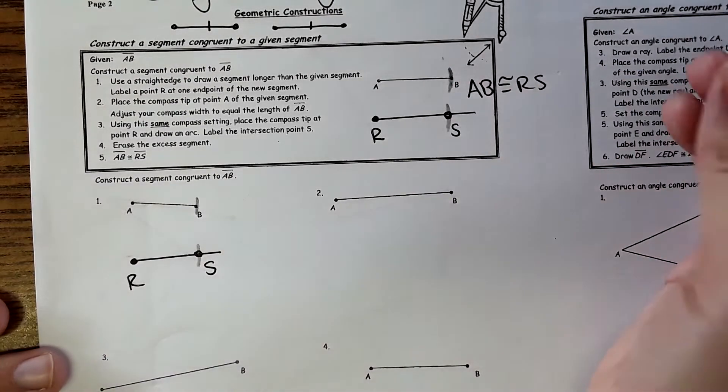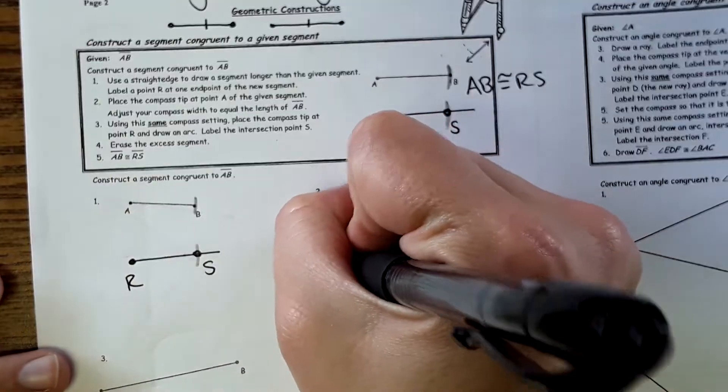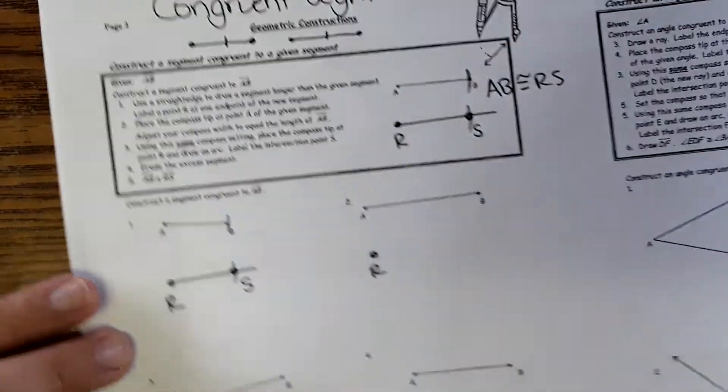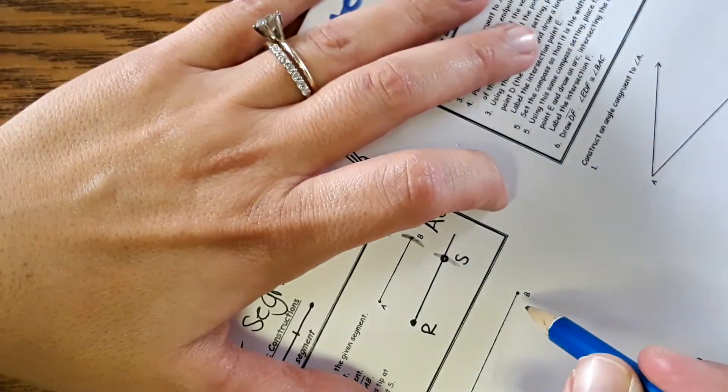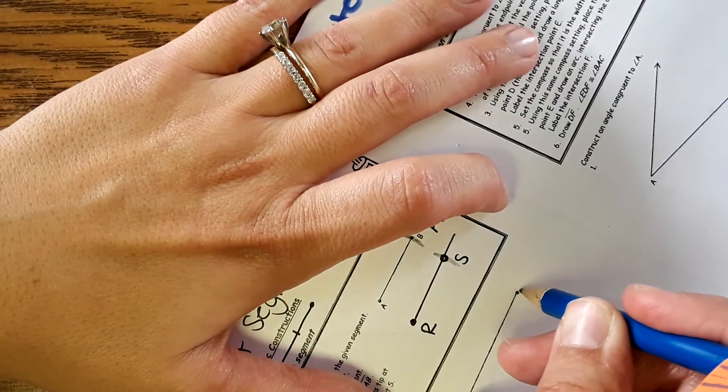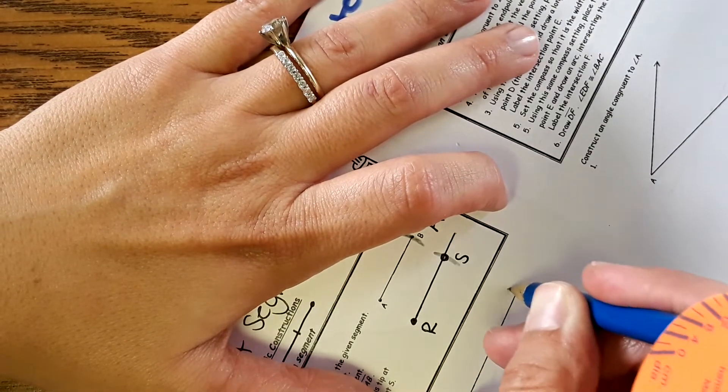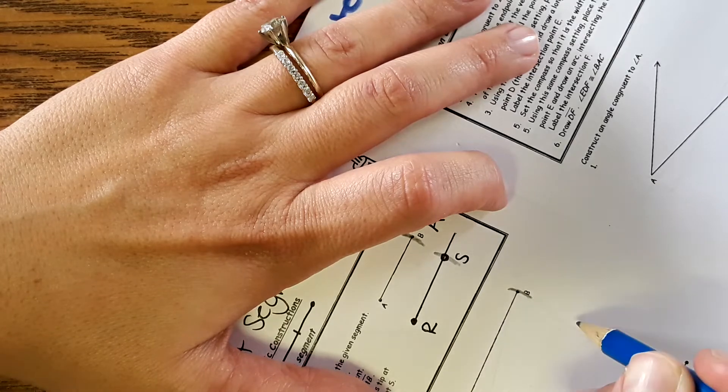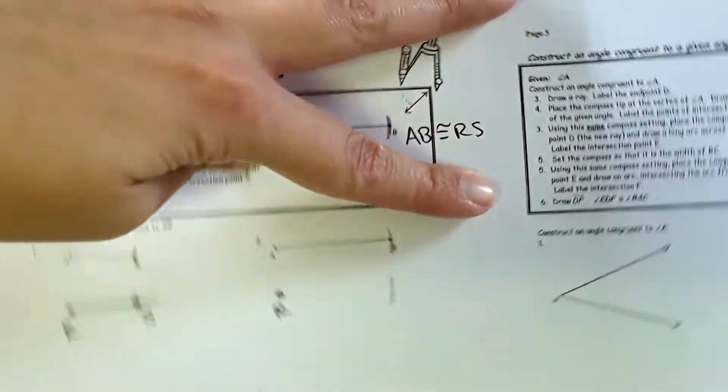Number two, same thing: point R. Measure the length between A and B with the compass, make an arc at B, and then take that same measurement, put it on R, and make that same arc.